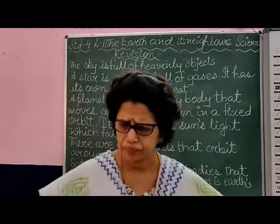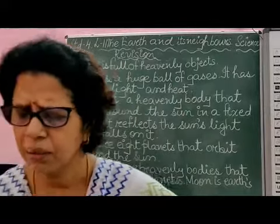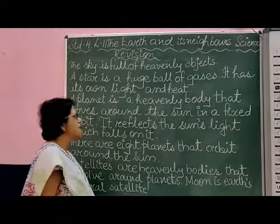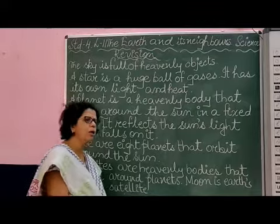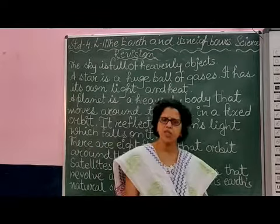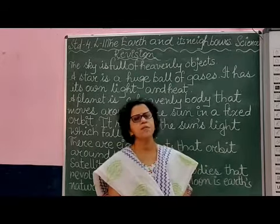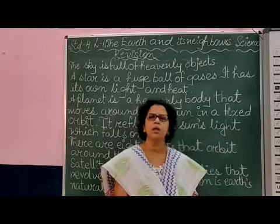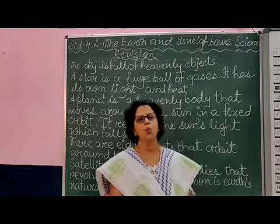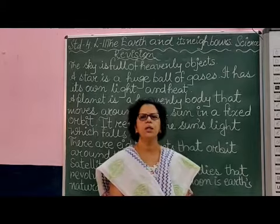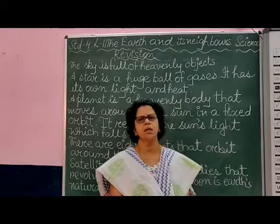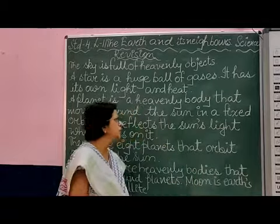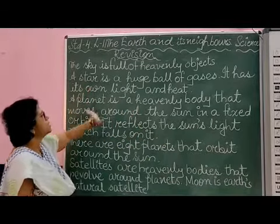The various patterns formed by the stars are called constellations. You must have seen various patterns like Ursa Major, Leo, and Orion. There are different patterns formed by the stars and they are called constellations.